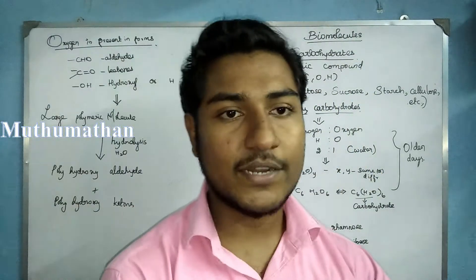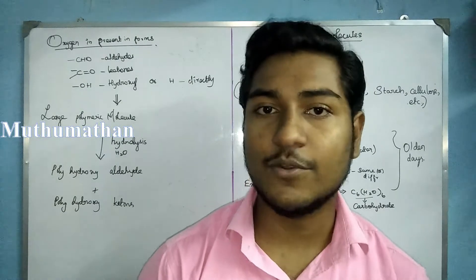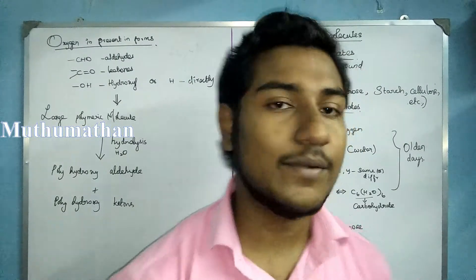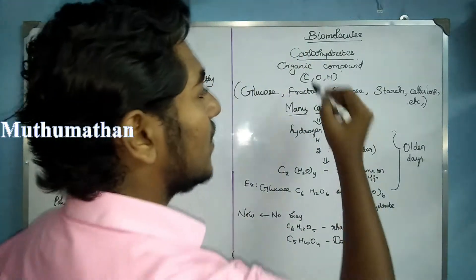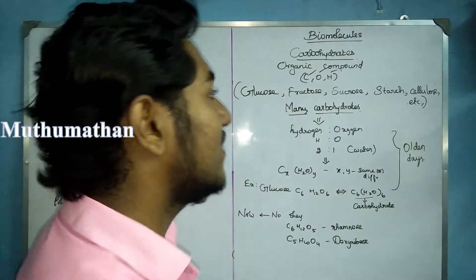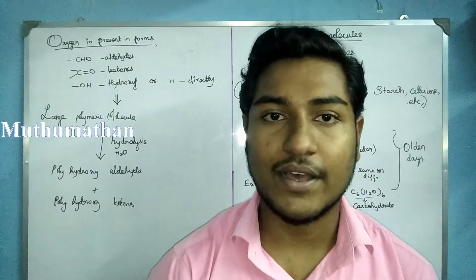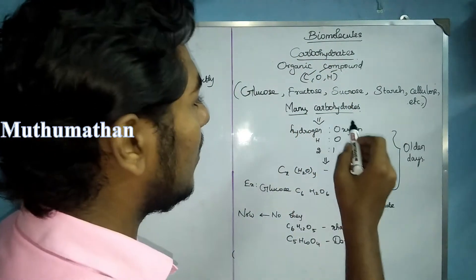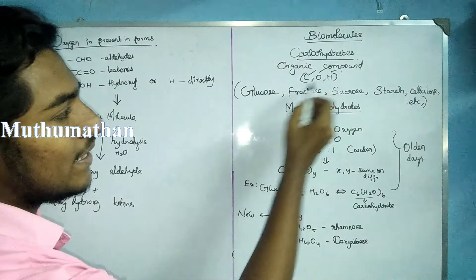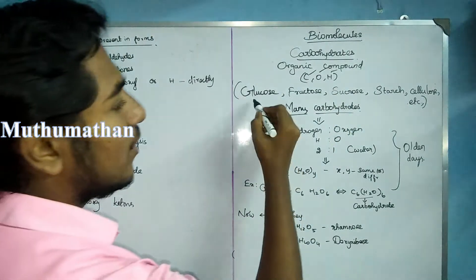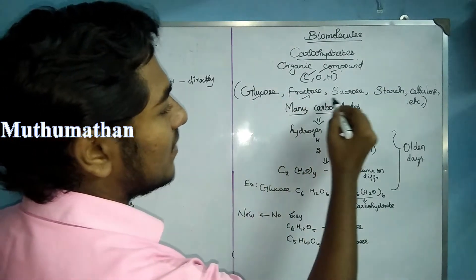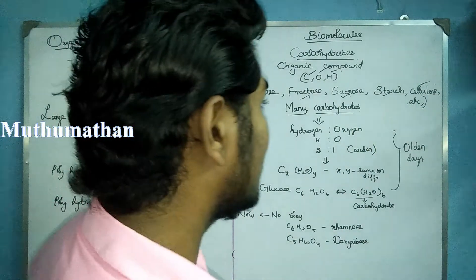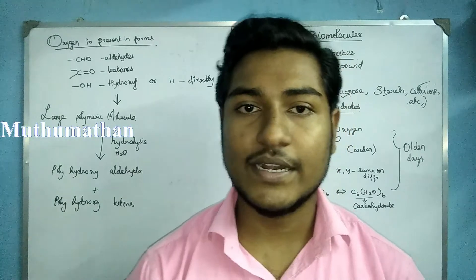If we look at carbohydrates, we know that they are organic compounds. Carbohydrates are made of carbon, oxygen, and hydrogen. Examples of carbohydrates include glucose, fructose, sucrose, starch, and cellulose. There are many different types of carbohydrates.